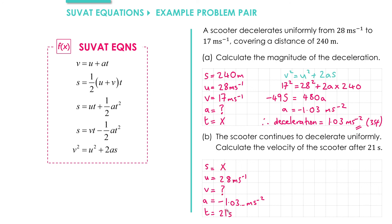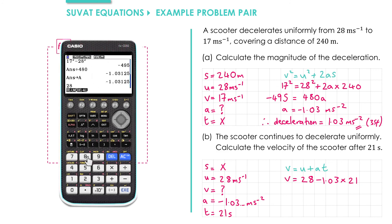We've got U, V, A, and T. That tells us to use V equals U plus AT. So we have V equals U, which is 28, and A is negative, so we get minus 1.03 times T, which is 21. Remember to use the exact value. We have 28, and we have to be really careful here because the value we've got of A is already stored as negative, so what we actually want is plus A times 21. That gives us 6.34 if we round to three significant figures.